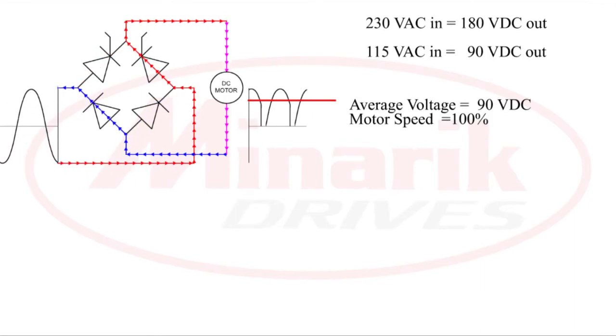If we fire the SCRs at their maximum firing angle with a 115 volt AC line, SCRs are rated for an output of 90 volts DC. With a 230 volt AC line, the output is 180 volts DC.